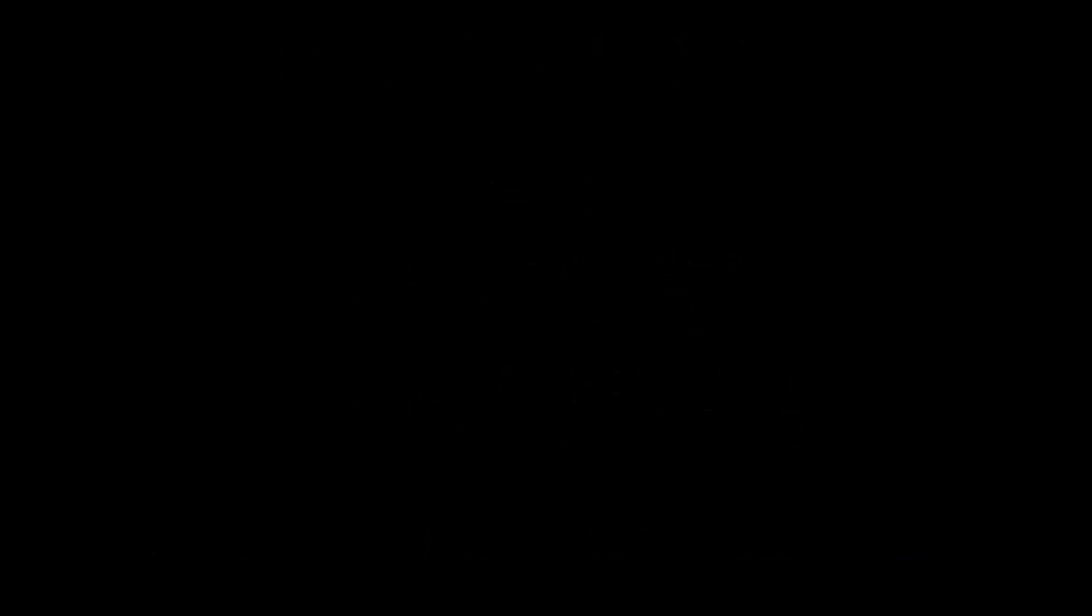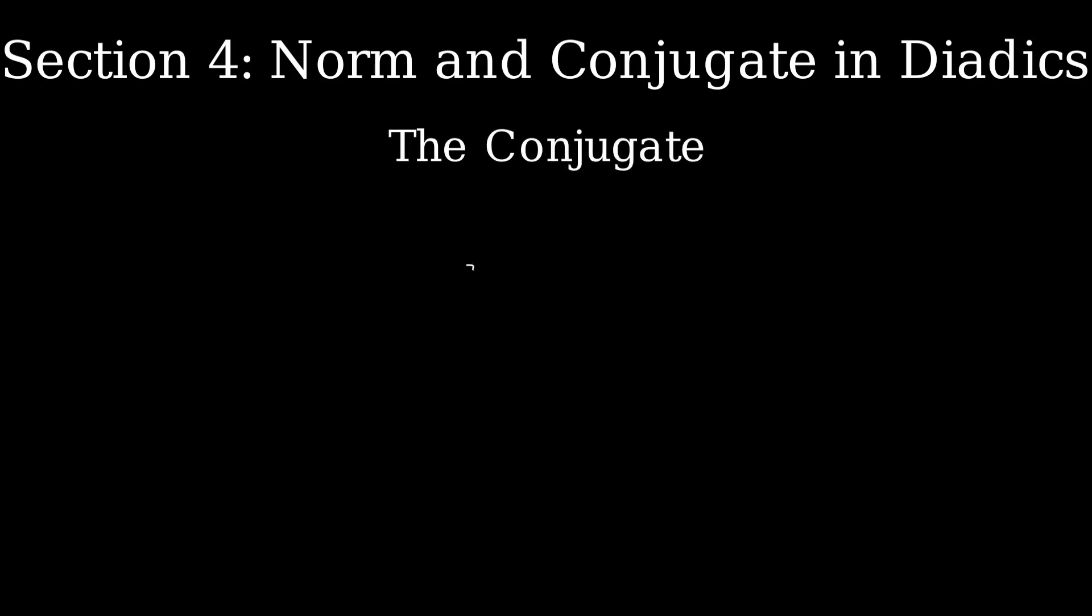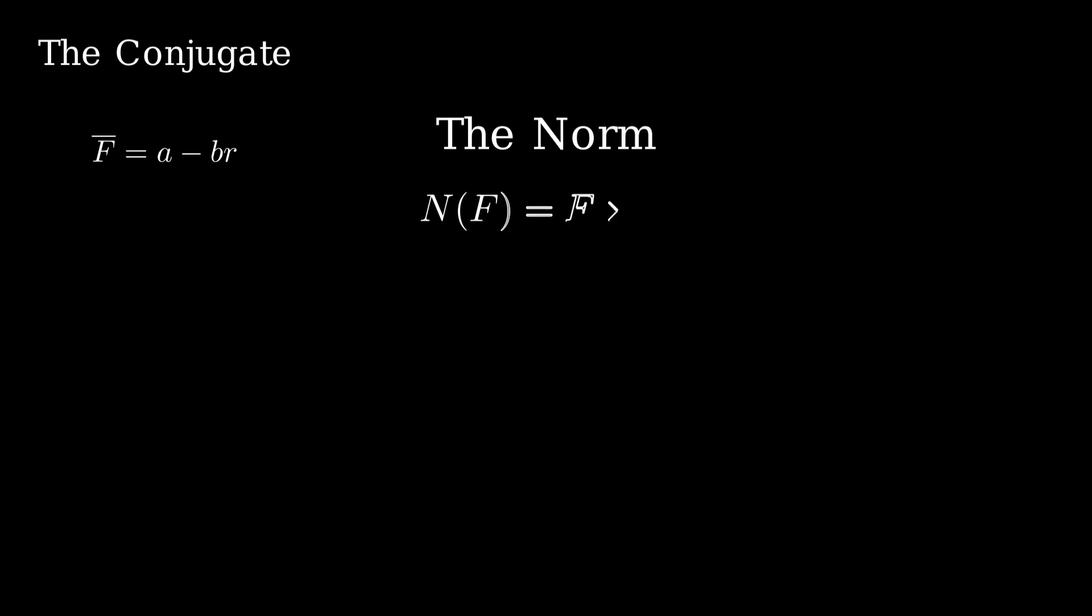In the dyadic system, we can define a concept similar to complex conjugation. If we have a dyadic number f defined as a plus b times r, then its conjugate is a minus b times r. This flips the sign of the r term while keeping the rest unchanged. Now, using this conjugate, we define the norm of f as the product of f and its conjugate. That gives us a plus br times a minus br. Expanding this gives a squared minus abr plus abr minus b squared times r squared. The middle terms cancel out, leaving a squared minus b squared times r squared. Since r squared equals 1, we end up with a squared minus b squared. That is the norm of the dyadic number.